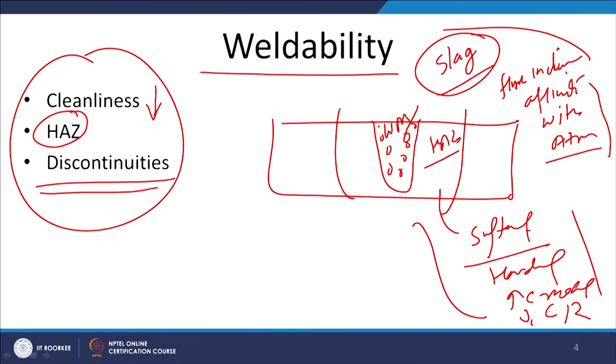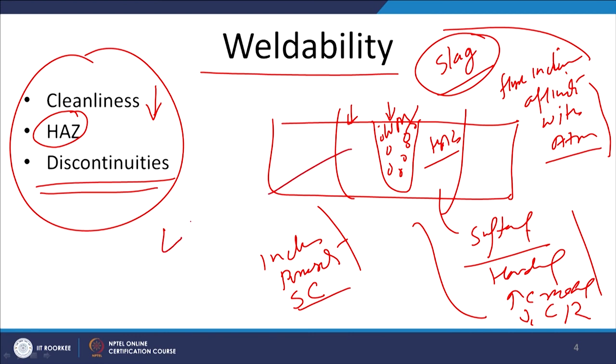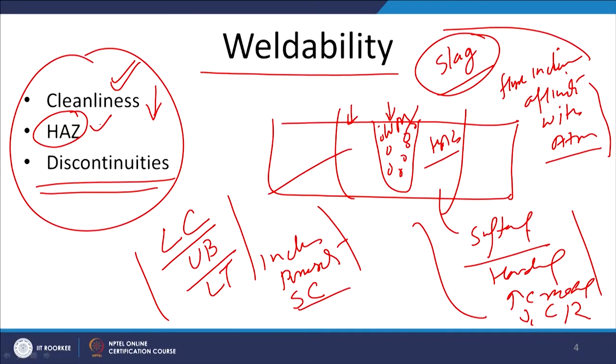Weld discontinuities can happen in the heat affected zone as well as in the weld metal. In the weld metal there can be inclusions, there can be porosity, and there can be solidification cracks. In the heat affected zone there can be liquation cracking, there can be under-bead cracking, there can be lamellar tearing. There are various types of crackings which can occur in the weld metal as well as in the heat affected zone which can reduce the weldability of the metal. To assess the weldability of a metal, we have to see how clean the weld metal is, how the HAZ properties are being affected, and the kind of discontinuities being formed when a metal is welded.